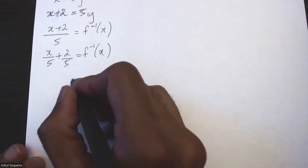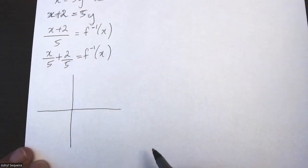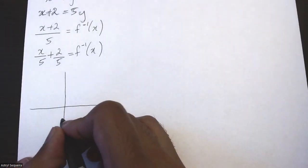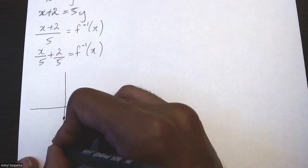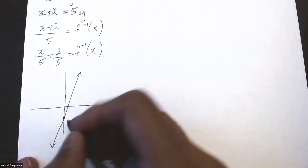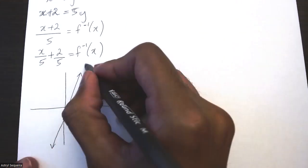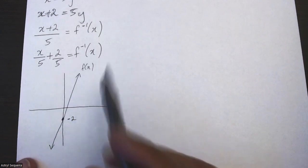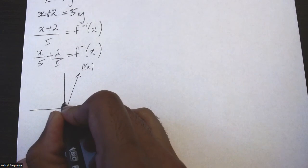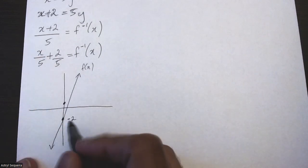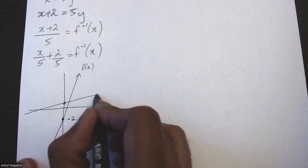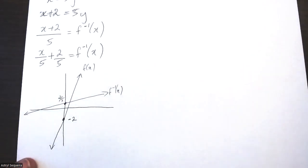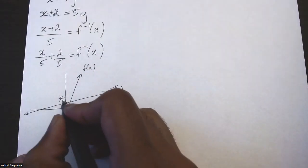Here is the original function and the inverse function. For the original function, the y-intercept is negative 2 and the slope is positive 5, so it's quite steep. For the inverse, I split the denominator to see that the y-intercept is 2/5 and the slope is positive 1/5, which is positive but very flat. I can see these two functions intersect at a point.